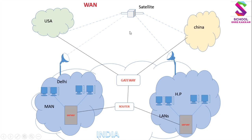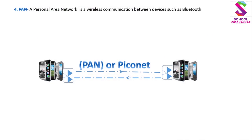Diagram में देखो — यह USA (United States of America) है, यह China है, और यहाँ हमारा HP और दिल्ली है — यह पूरा हमारा India है। सारे राज्ये आपस में जुड़े हुए हैं, और हमारा देश दूसरे देशों के साथ telephone line के जरिए जुड़ा हुआ है, जिसमें router लगा हुआ है। यह Wide Area Network का diagram है।